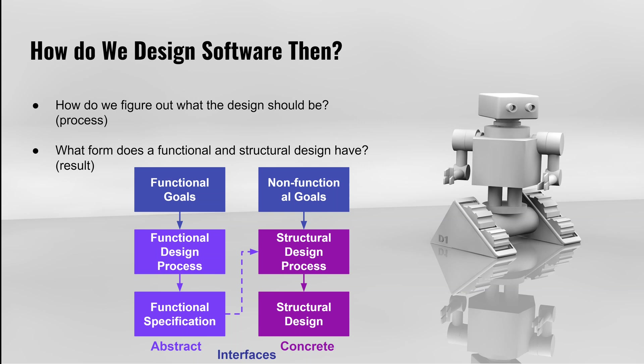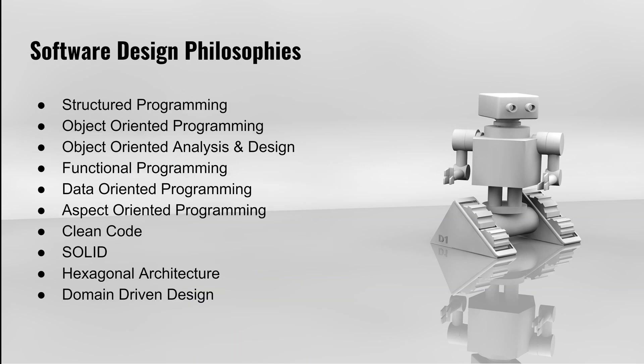So just exactly how do we do software design in practice? How do the functional and the structural design processes look, and how do the functional specification and the structural designs look? There are several different approaches to software design, and some of the more popular ones are listed here. Going into detail with each of these philosophies would be too long for this one video, so I won't do that, but I will probably go into detail with some of these in later videos.